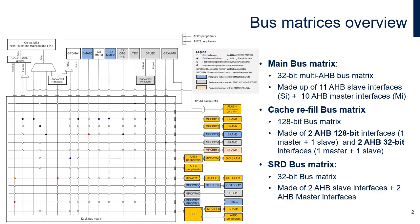The main 32-bit AHB multilayer bus matrix, in the center of the figure, interconnects 11 masters and 10 slaves. The 128-bit AHB5 instruction cache refill bus matrix is made up of a 128-bit interface and two 32-bit interfaces. The 128-bit interface connects the instruction cache to the flash memory interface (FLITF), allowing fast execution from internal flash.